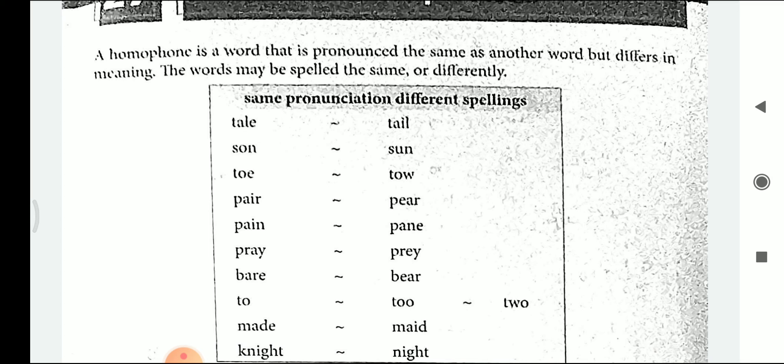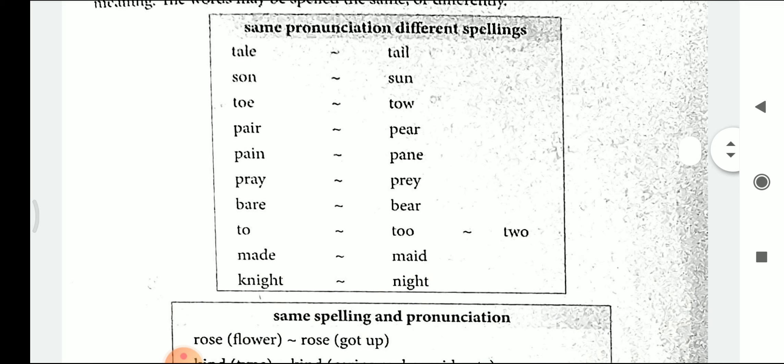T-O-E, 'toe', means the part of the human body, and T-O-W, 'tow', means to pull another vehicle or animal. P-A-I-R, 'pair', and P-E-A-R, 'pear' — 'pair' means two things kept together, such as a pair of shoes, and 'pear' means a fruit. P-R-A-Y, 'pray', means to worship, and P-R-E-Y, 'prey', means the animal which is eaten by another animal.